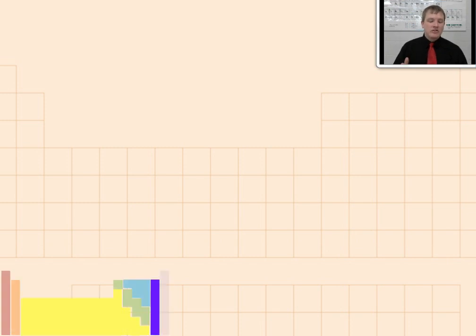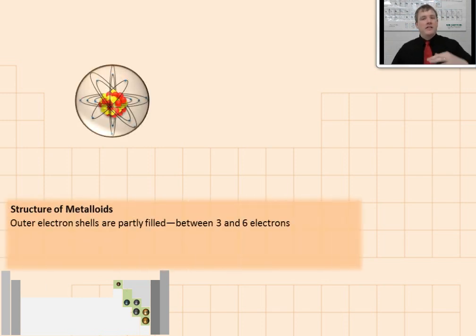First off, let me show you where they are in the periodic table. Here again are most of the regions of the periodic table. I'm going to gray out the regions that are not metalloids to show you where the metalloids are. And we're actually going to take a look at one very common metalloid to begin. Let's take a look at silicon to see how the electrons in metalloids are arranged.